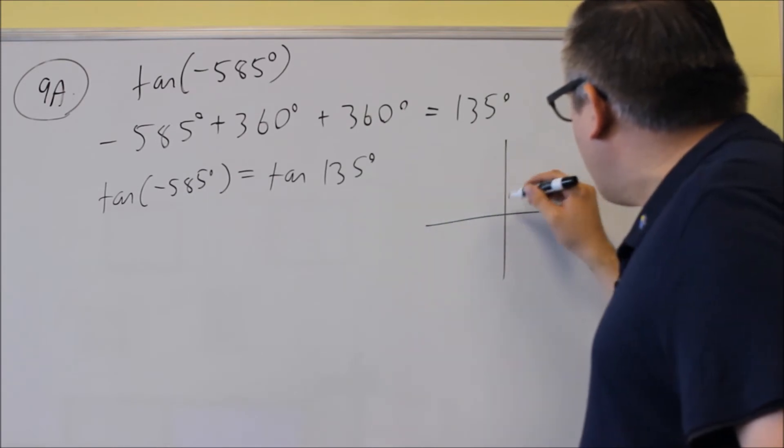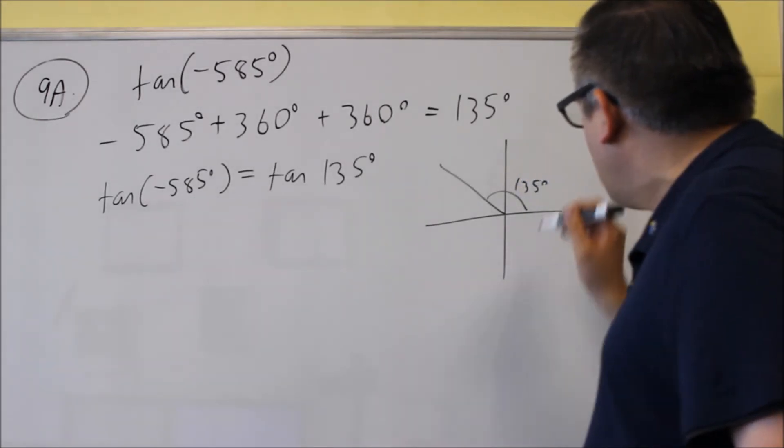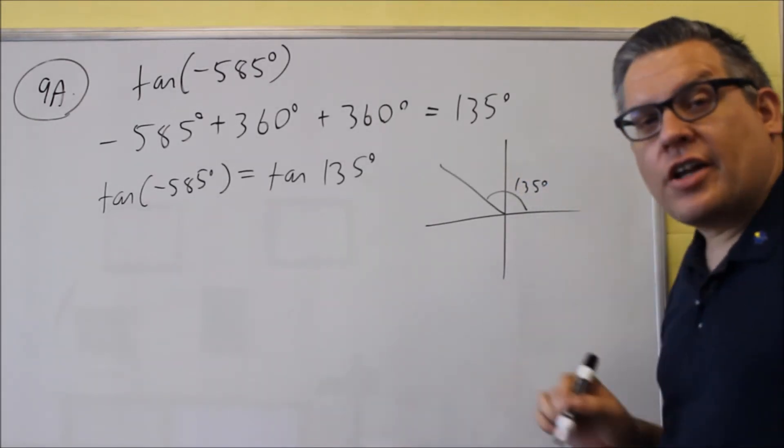If I do 135, that's going to be drawn in the second quadrant because it's between 90 and 180.